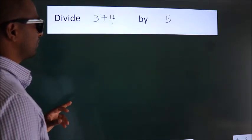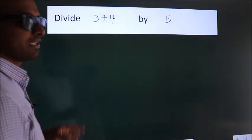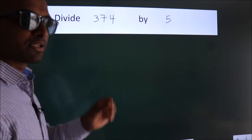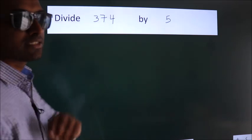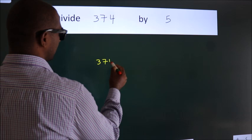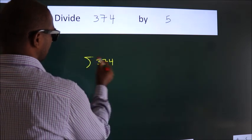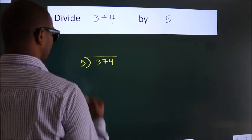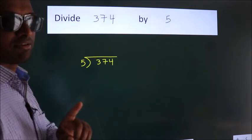Divide 374 by 5. To do this division, we should frame it in this way. 374 here, 5 here. This is your step 1.